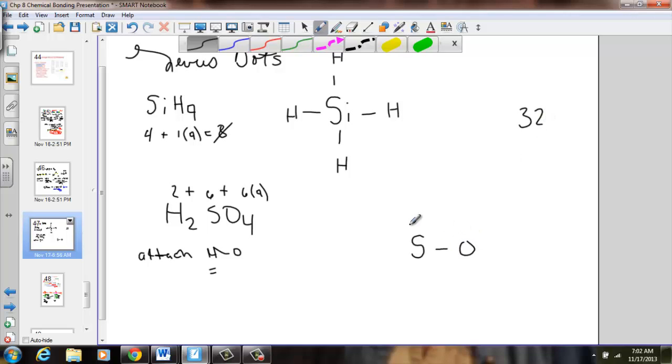Attach back those oxygens to the central atom. How many have we used? 2, 4, 6, 8, leaving us 24 remaining. Fill out the octet with the remaining electrons: counting through all positions, using all 24 dots. No dots left.